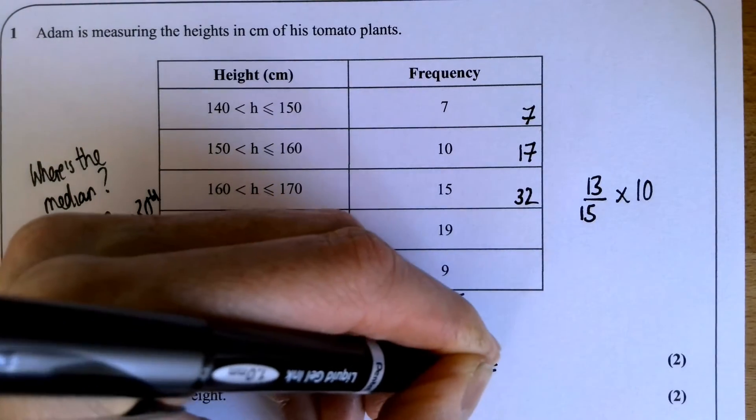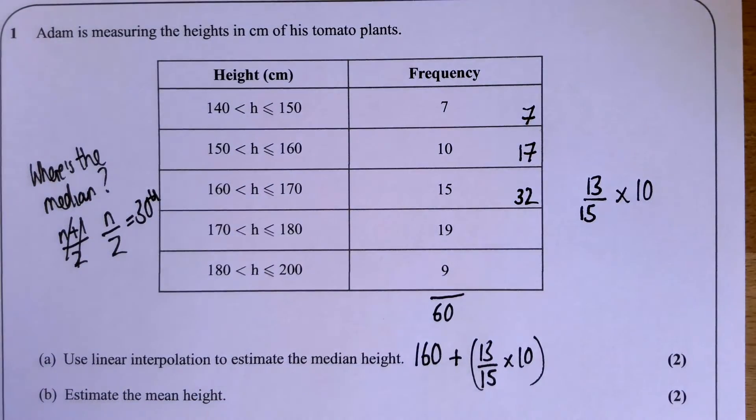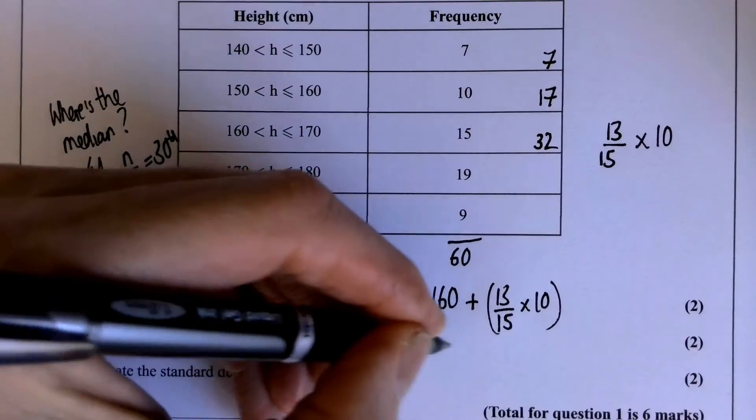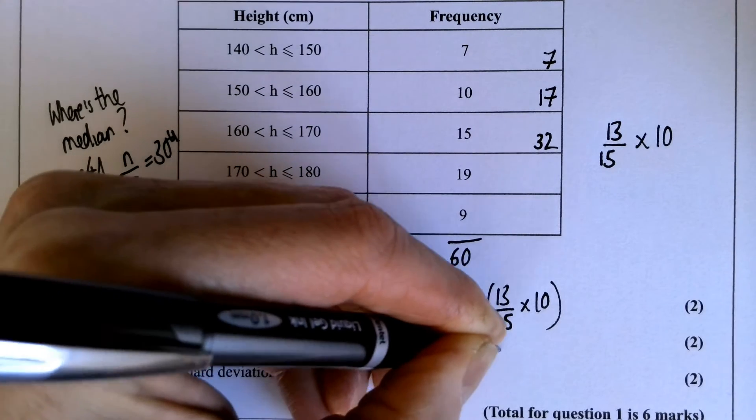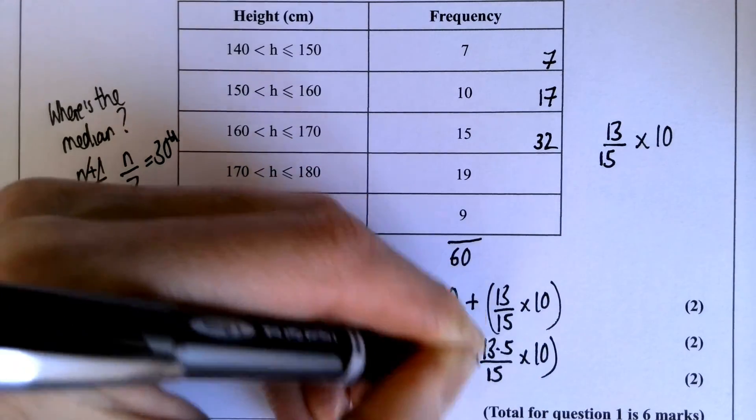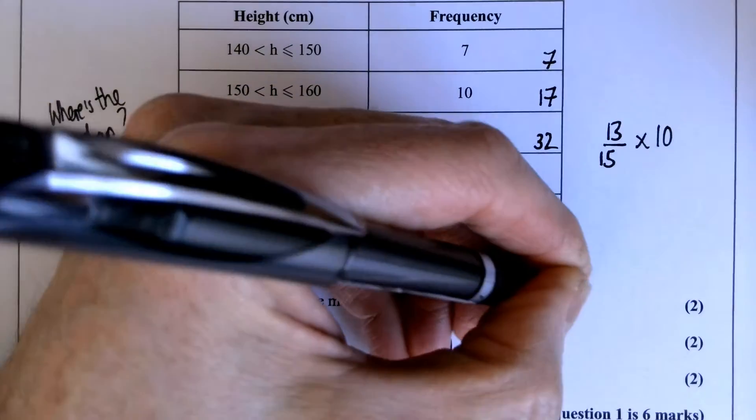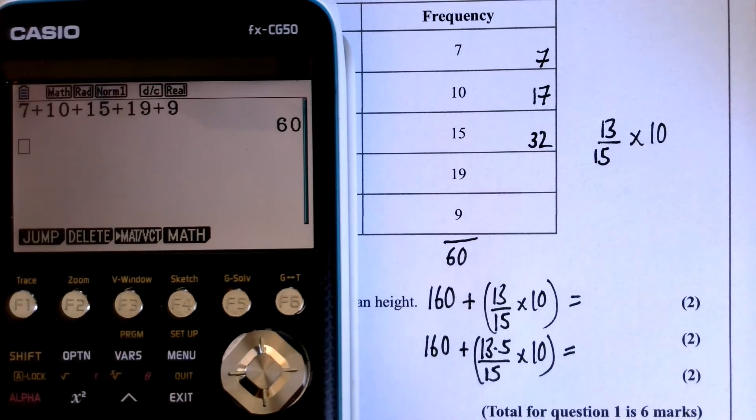I need to go 13 out of 15 people, and it's 10 wide. And that group starts at 160, so my estimate for the median is going to be 160 plus 13 over 15 times 10.